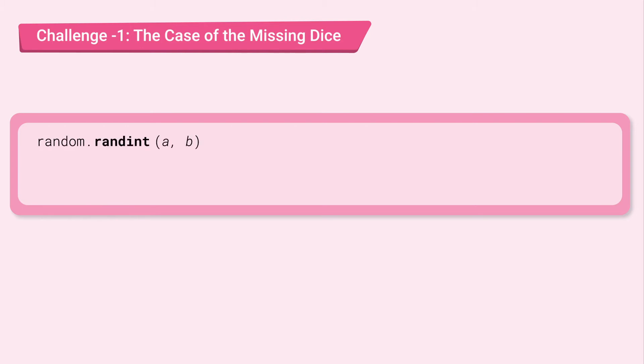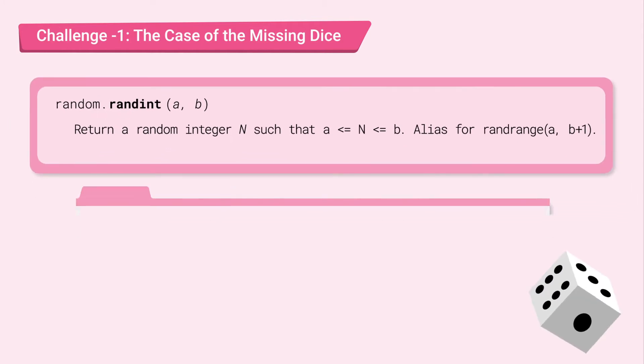random.randint takes a and b. The variables a and b here are called parameters. randint takes two parameters a and b then returns or gives back a random integer n such that n is between a and b inclusive.